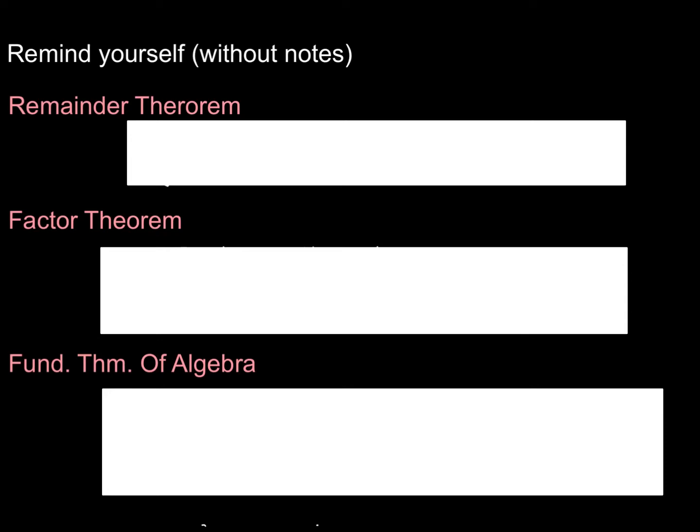So without looking back at your notes, you're going to attempt on your own to write down the remainder theorem, the factor theorem, and the fundamental theorem of algebra as best you can. So take about two to five minutes per each one. Write them down as best you can. So on your page of notes, you should see these three attempts on your own.